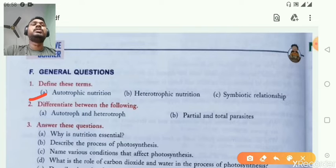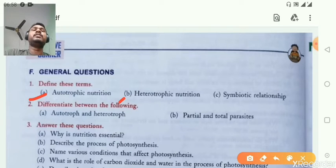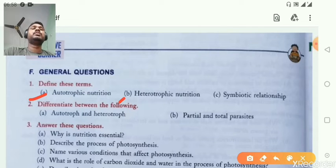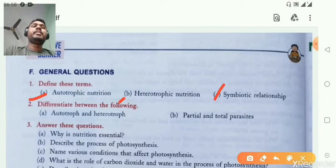Second is heterotrophic nutrition. The mode of nutrition in which an organism does not prepare their own food and depends on others for their food is known as heterotrophic nutrition. Symbiotic relationship is defined as the mutual beneficial relationship between two organisms, also known as symbiotic association or symbiosis.